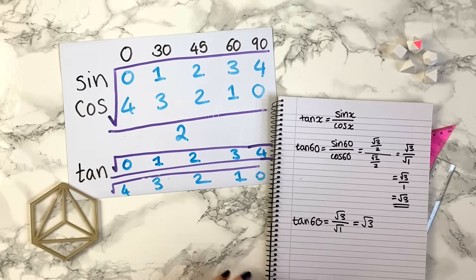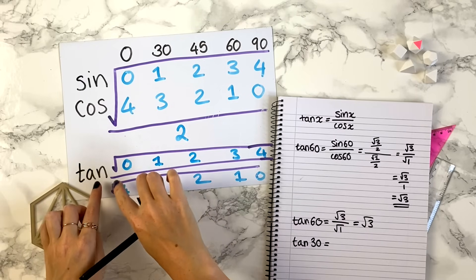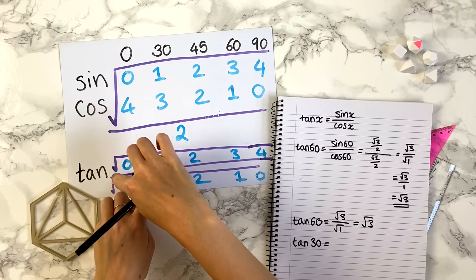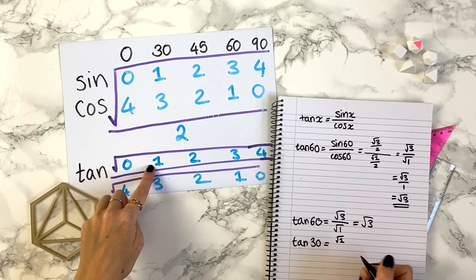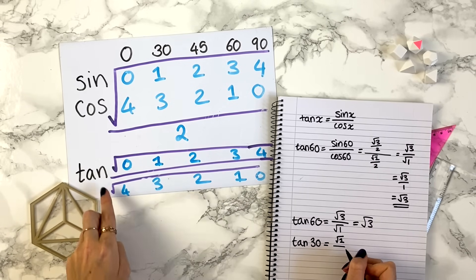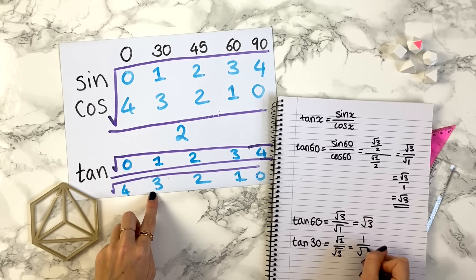Or let's say you want tan of 30. You take the top row here, so tan of 30, you have the square root of 1 divided by the square root of 3, and that's going to be 1 over root 3.